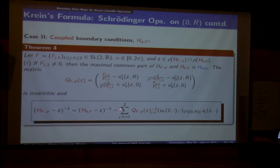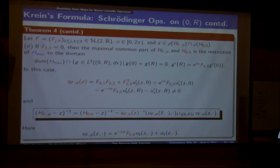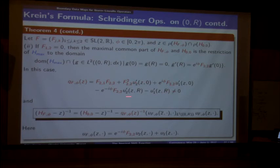If we go to the exceptional case f_{1,2} equals zero, it collapses into a rank 1 situation: you now have a scalar, involving all the matrix elements and elements of the defect subspace.